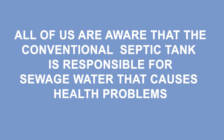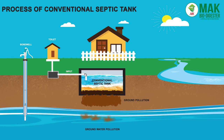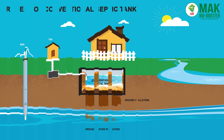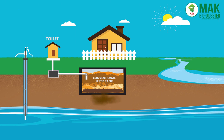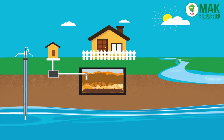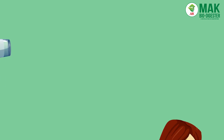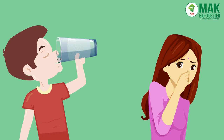All of us are aware that the conventional septic tank is responsible for sewage water that causes unhealthy living conditions and most of the health problems. As you can see here, conventional septic tank water percolates into Mother Earth, causing pollution to the groundwater. We are using that polluted groundwater for drinking and domestic use.